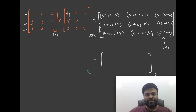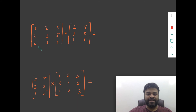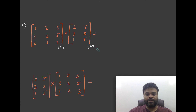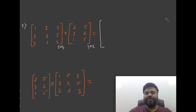Now these two problems were straightforward. Let's look at some other questions where the matrices don't have the same size. In the third example, the first matrix is 3 cross 3 — three rows and three columns — but the second matrix is 3 cross 2, with three rows and two columns. Things get a little tricky, but we will see how to solve it using the same procedure.